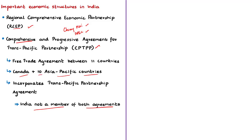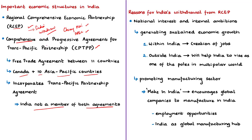India decided to withdraw from RCEP, stating its national interest and its internal ambitions. A long-standing goal for India is to generate a high level of sustained economic growth. Sustained economic growth matters for two reasons. The first reason is its effects within India, wherein it will pave way for expansion of many sectors and companies, thereby creating huge job opportunities and helping secure a stable future for India's young population. The second reason is its external effects — sustained economic growth will put India in the world's economic power map and facilitate India to rise as one of the poles in a multipolar world.